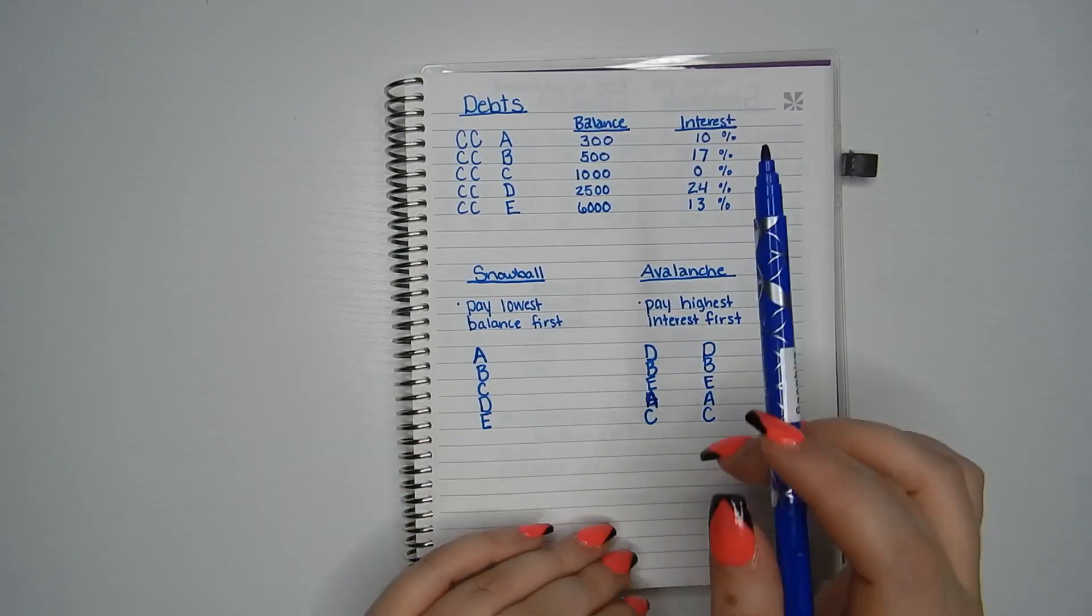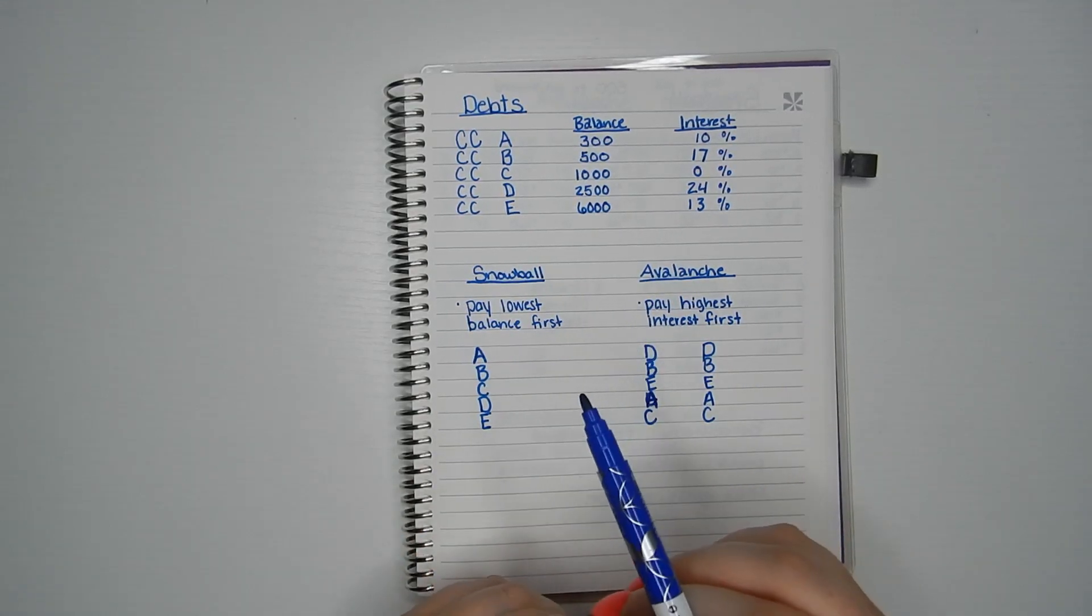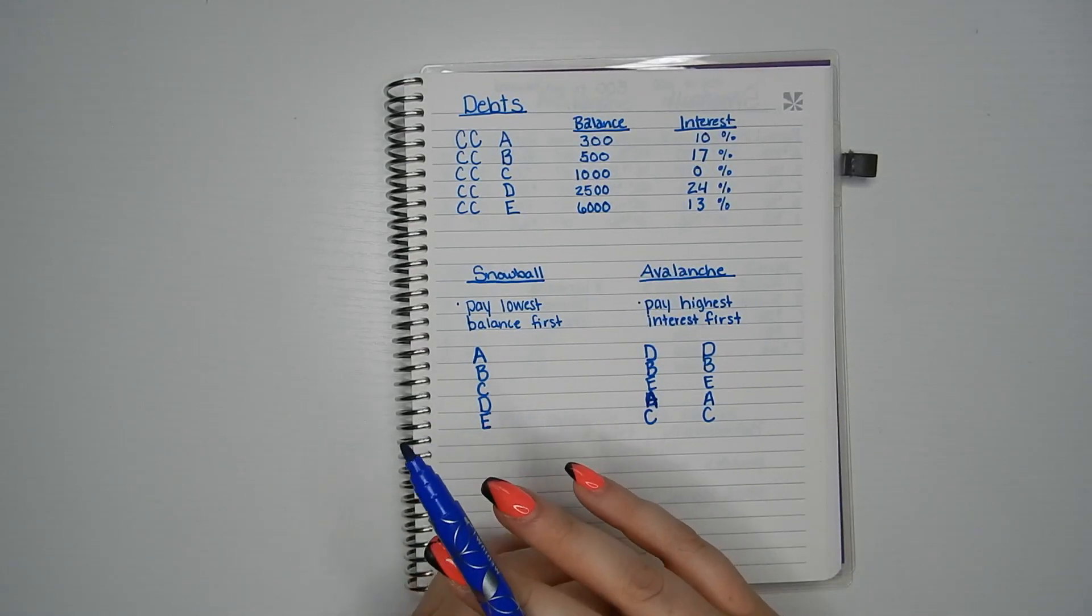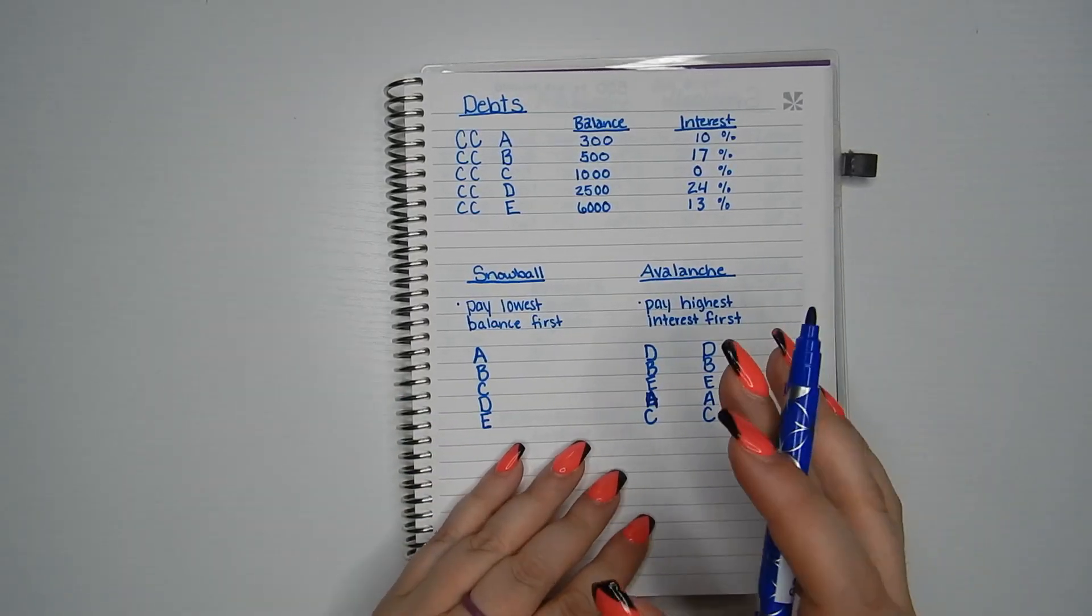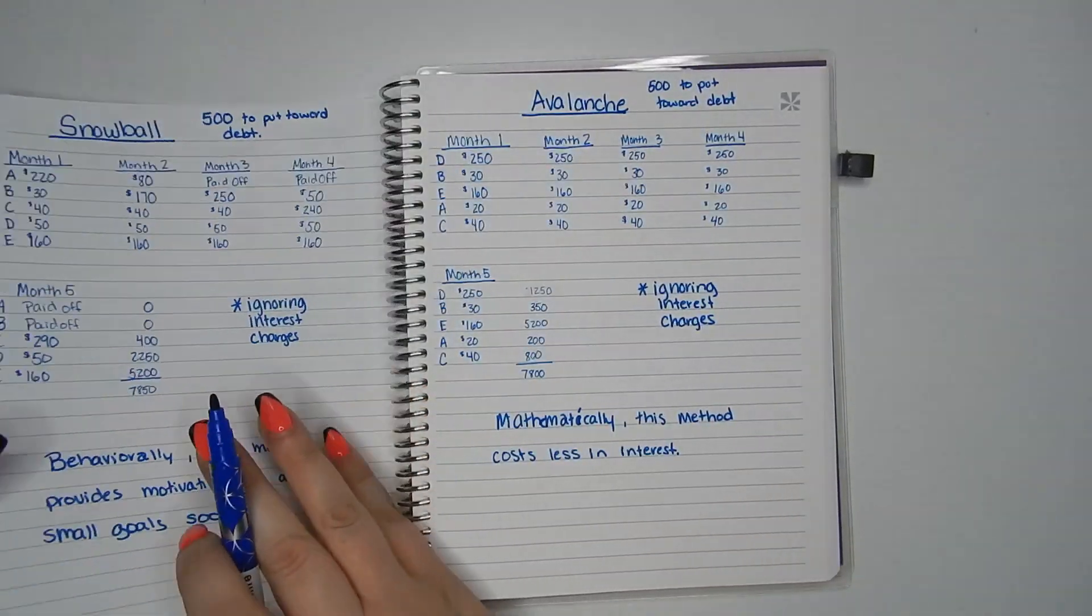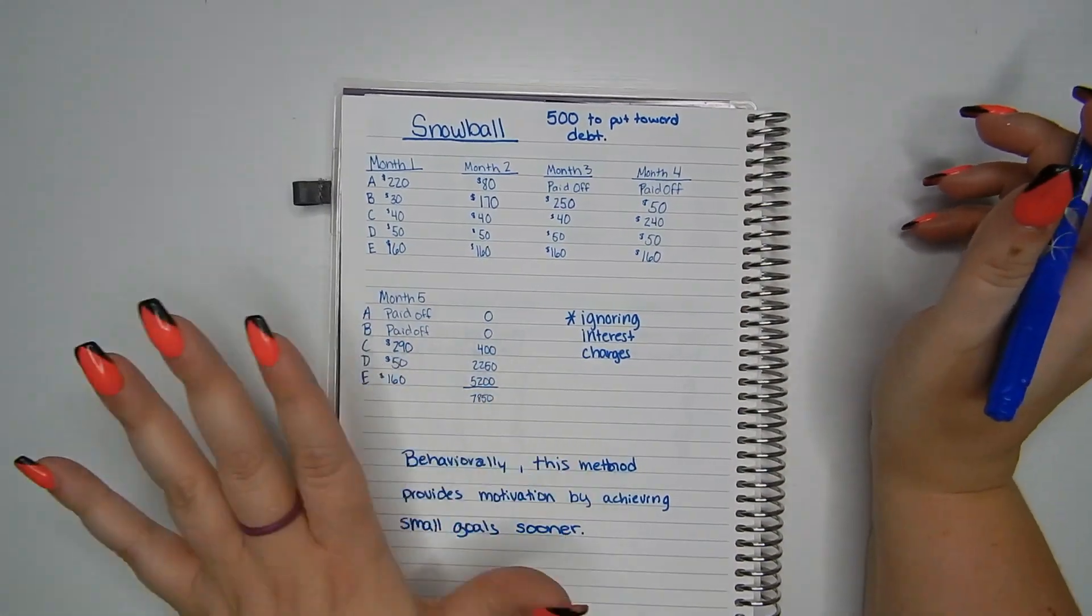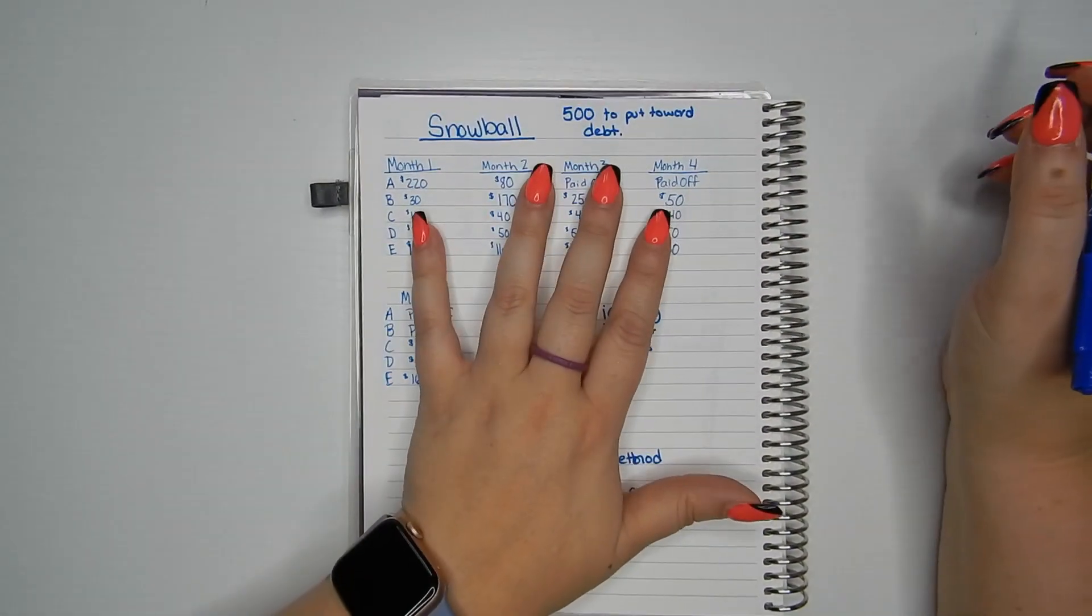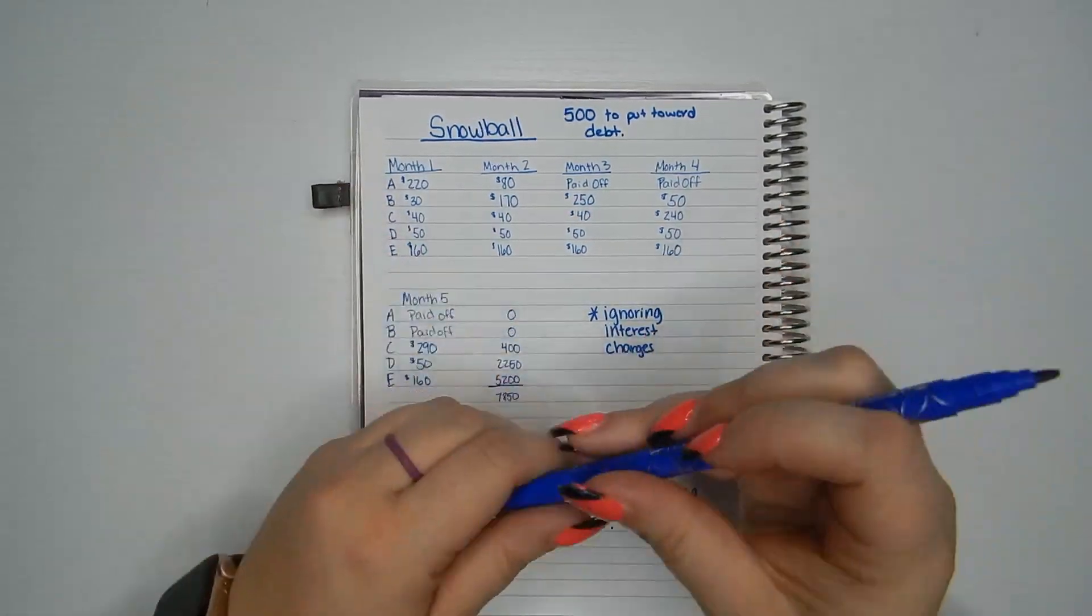Now, granted, I did not calculate how much interest would accrue, just looking at the base balances, ignoring any interest charges that you might get, just so you can kind of see how this works. So first I did the snowball and I said, every month we have $500 to put towards debt. So in month one, what I did was I listed out my cards A, B, C, D, E.